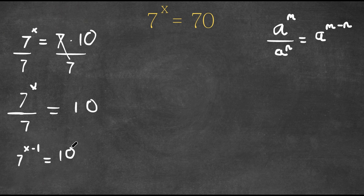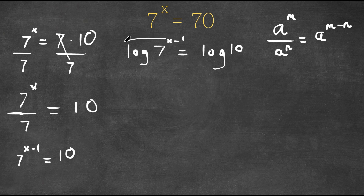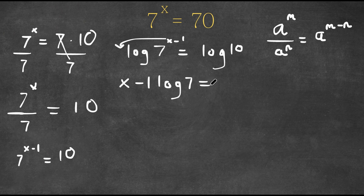So now what we're going to do is take the log of both sides. We have log of 7 to the power of x minus 1 is equal to log 10. Now the power property of logs states that I can move this exponent to the front of the log. So now this would be x minus 1 times log 7 is equal to log 10.